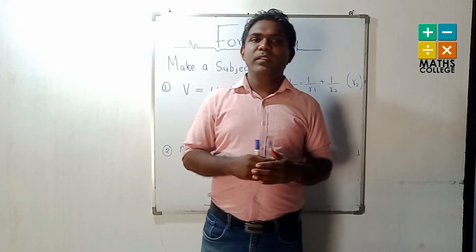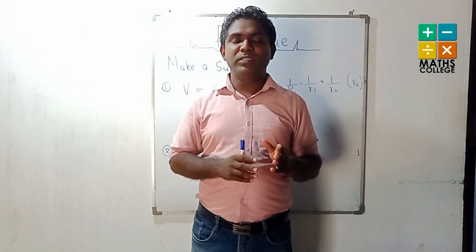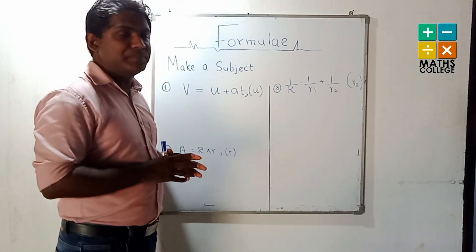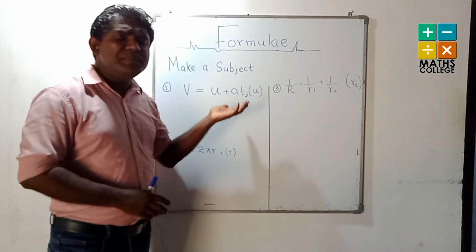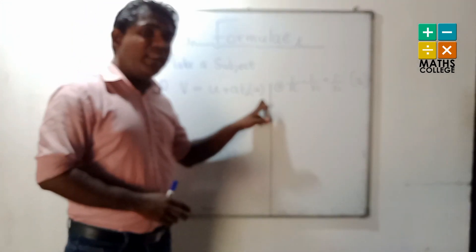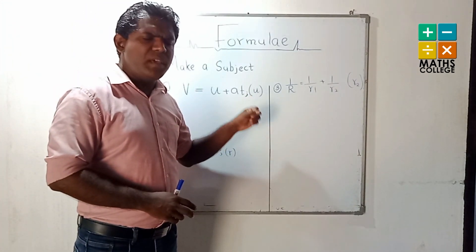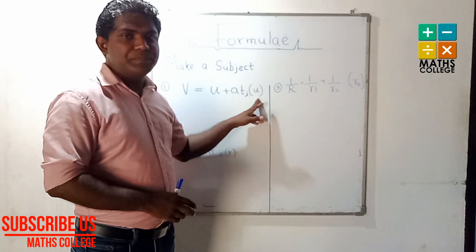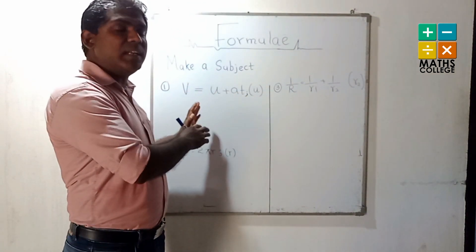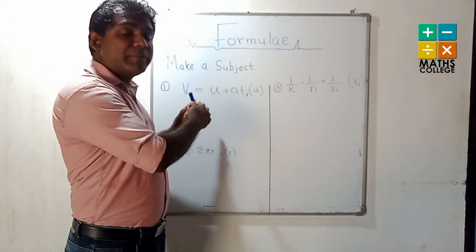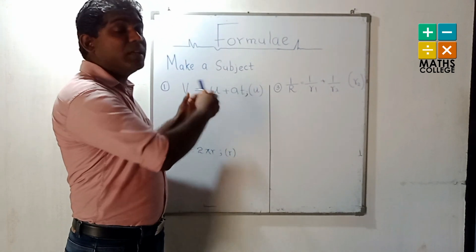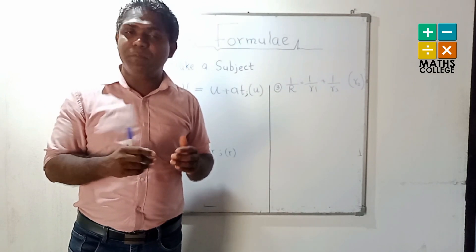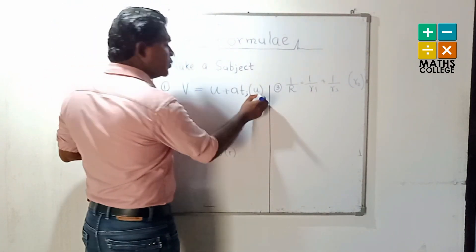Today I will explain this formula lesson by using examples. Look at the board — you have three examples here. The task is to make a variable the subject. What does 'subject' mean? You have one letter as the subject, meaning you have to keep that subject letter on one side only, and all other letters and algebraic expressions go to the other side.